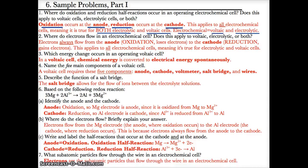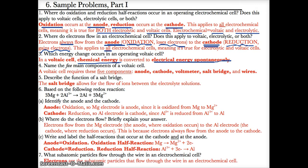Electrons always flow from the anode, where oxidation occurs and electrons are lost, to the cathode, where reduction occurs and electrons are gained. This applies to all electrochemical cells. In voltaic cells, a chemical reaction causes electricity to be produced spontaneously — chemical energy converts to electrical energy.